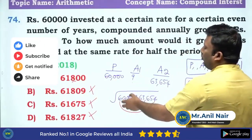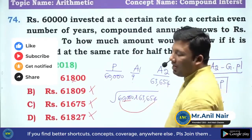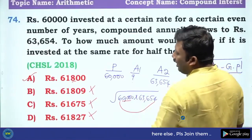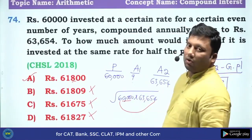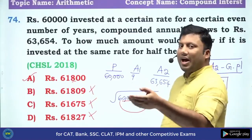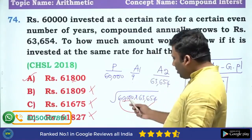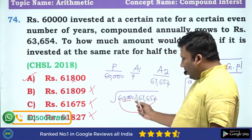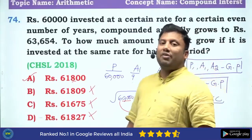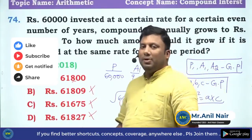Again repeating: under the square root there are four zeros, so the answer should contain two zeros. Or: the number under the root is even, so the square root answer should be an even number. These shortcuts help you eliminate options quickly.